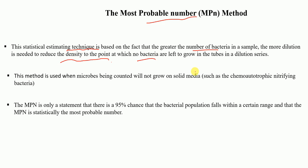This is a statistical estimating technique based on the fact that the greater the number of bacteria in a sample, the more dilution is needed to reduce the density to the point where no bacteria are left to grow in the tubes in a dilution series. This method is used when microbes being counted will not grow on solid media. It gives only a 95% probability that the bacterial population will fall within a certain range — for example, between 3 and 300, with a most probable number of 110.